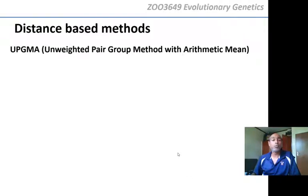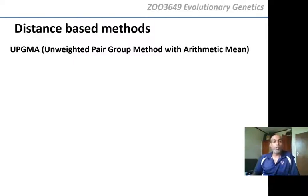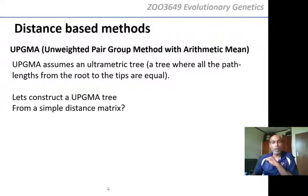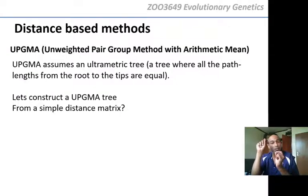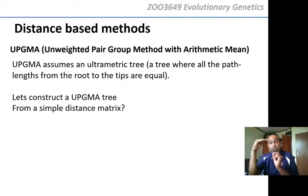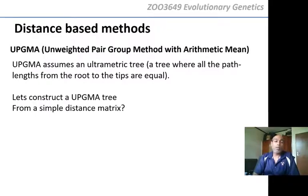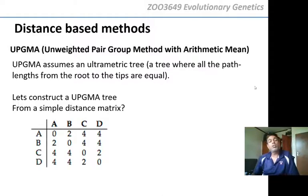There are two distance-based methods we're going to learn in Zoo 3649. The first is UPGMA — the Unweighted Pair Group Method with Arithmetic Means. UPGMA is the simplest way to use distances and assumes an ultrametric tree, meaning a tree where all path lengths from the root to the tips are equal. The distance from the root to any leaf is exactly the same for all leaves.